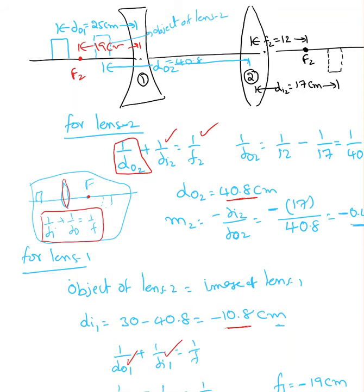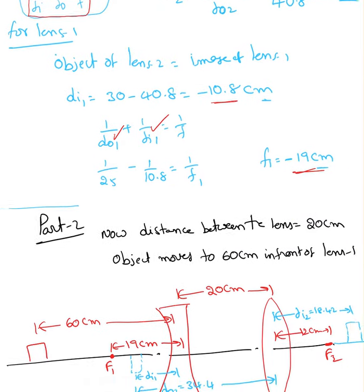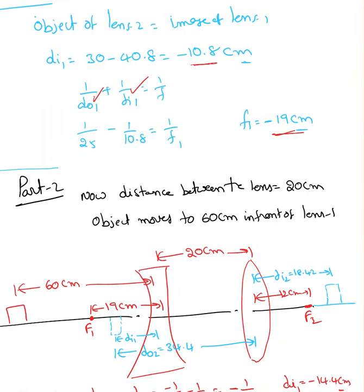Now the same example, I'm doing the second part. The distance between lenses is reduced from 30 cm to 20 cm. Now distance is 20 cm. Object moved to 60 cm in front of the lens.